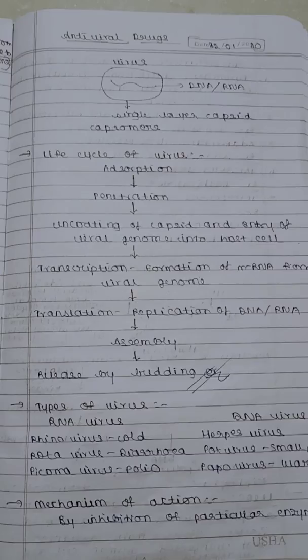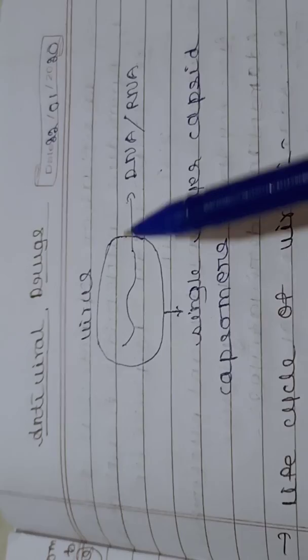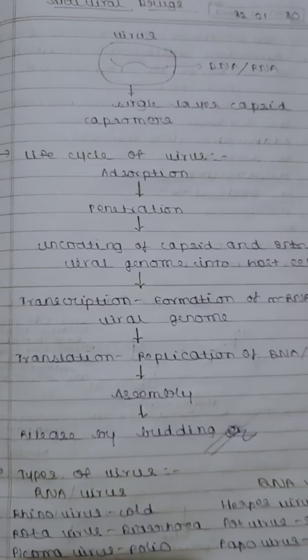Antiviral drugs are the drugs used in the treatment of various infections caused by viruses. The structure of the virus consists of a single layer called the capsid, and it contains genetic material that is either DNA or RNA — in most cases it is usually made up of RNA. The capsid is the outer covering of the virus.